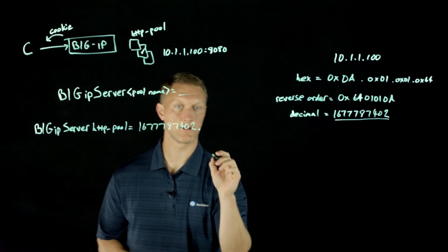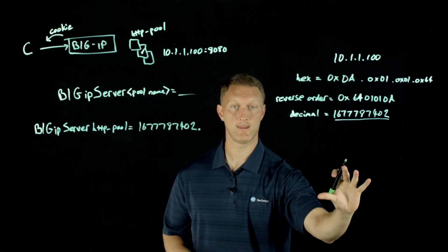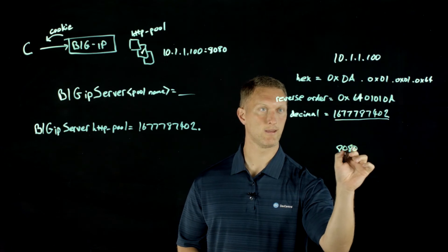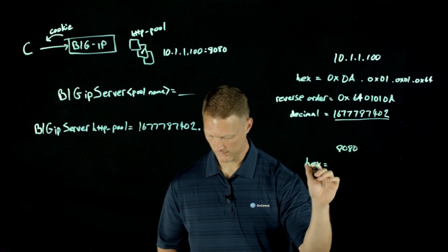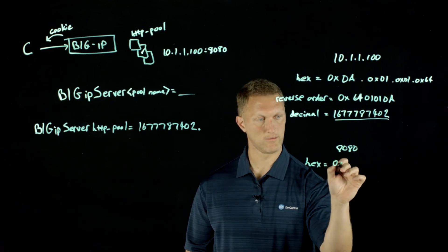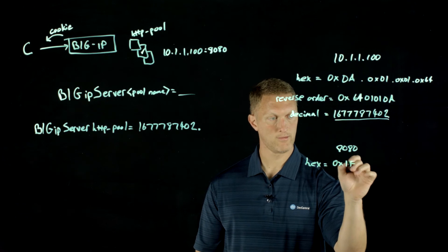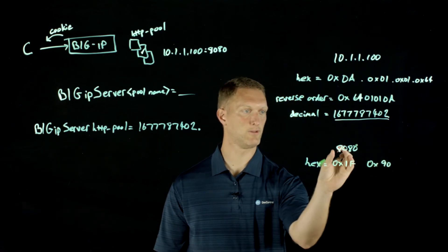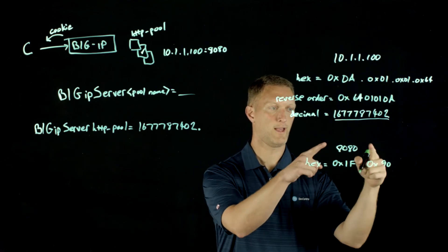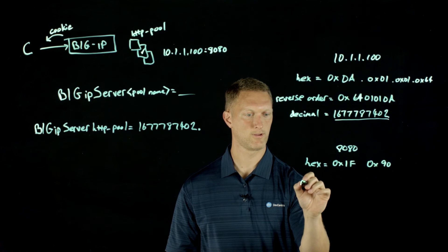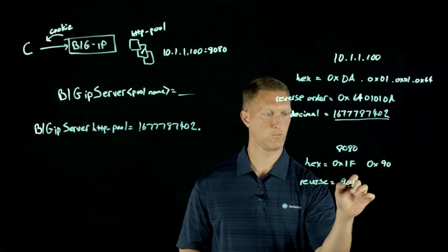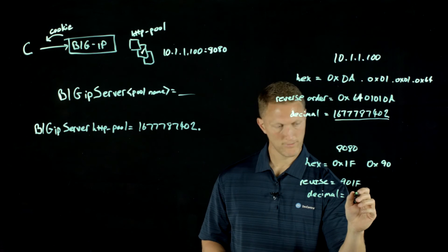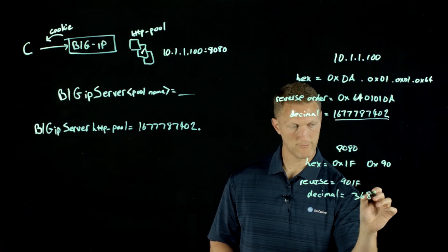But then we're going to put a dot right here and we're going to take the port number 8080, and we're going to do the exact same calculation on that. If we start now with port 8080, and then we're going to go hex on that equals 0x1F, which is the first 80 right here, and then 0x90 is the second one there. You take it like a byte at a time, we're going to do the reverse order. So reverse equals 901F and then convert that to decimal. That is going to equal 36895. That is the port number when we do all the calculations, that's the port number value that's going to come into the cookie.